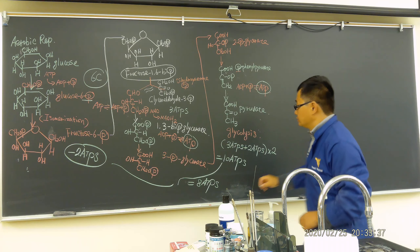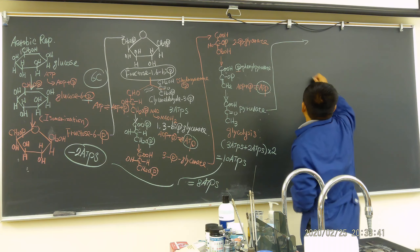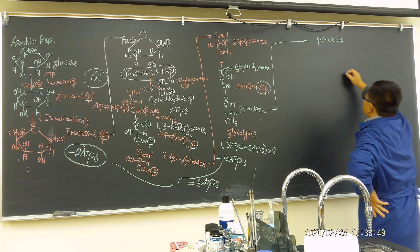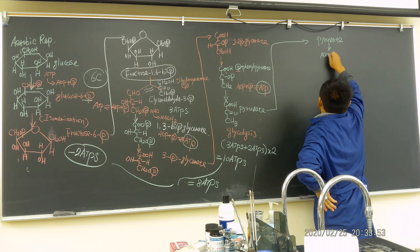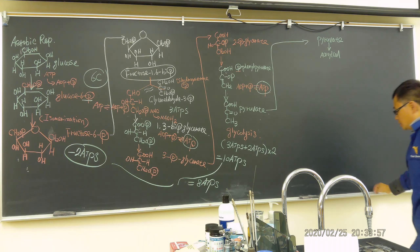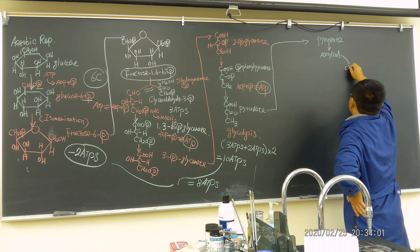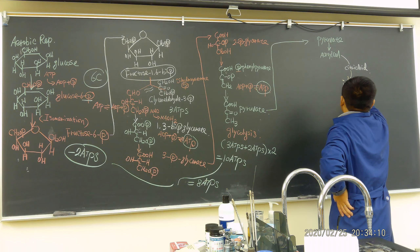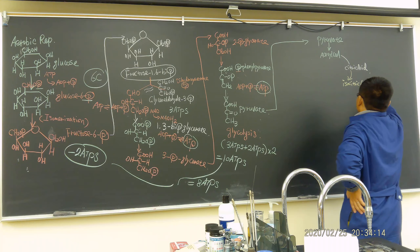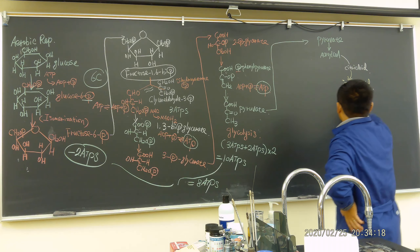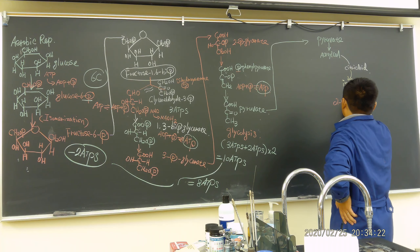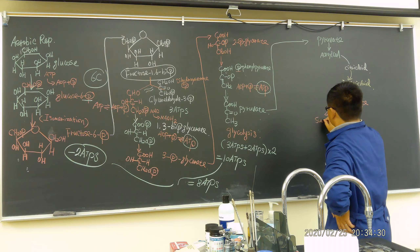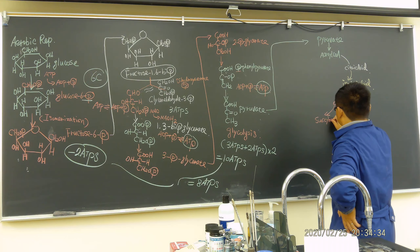This is pyruvate. The pyruvate — we're going to go here and draw the circle. First, there is a transition step: acetyl coenzyme A. Then we're going to draw the Krebs cycle circle. So we have: citric acid, then go here — isocitric acid — isomerization. Then we go here: alpha-ketoglutarate. Then we want here — succinyl CoA — then go flat, become succinate.